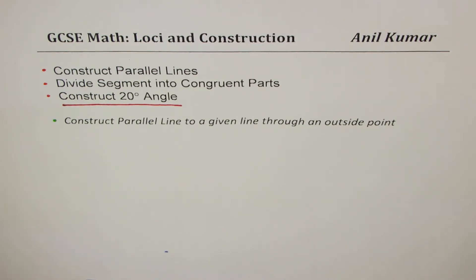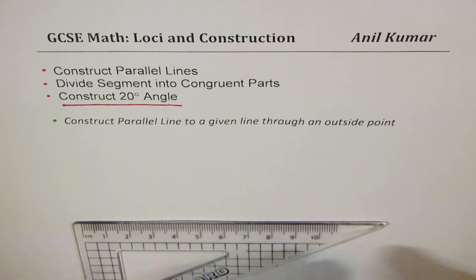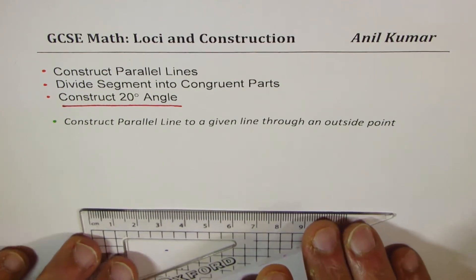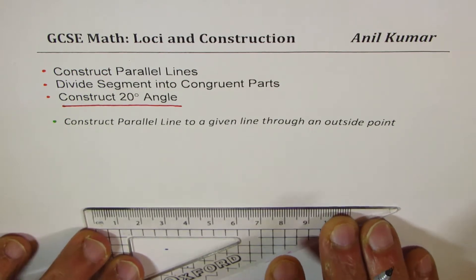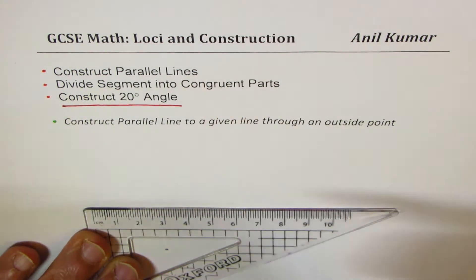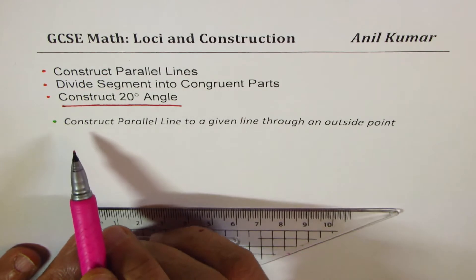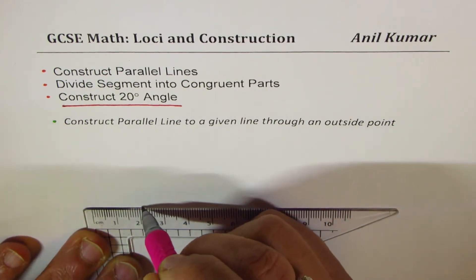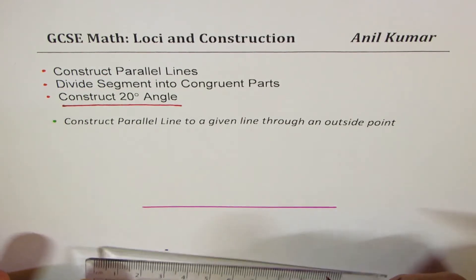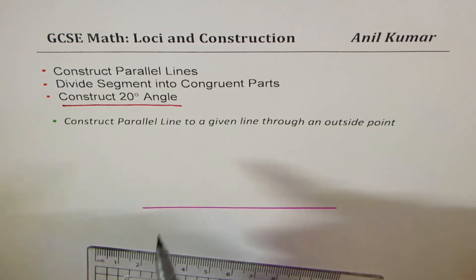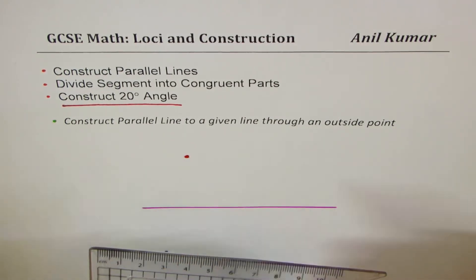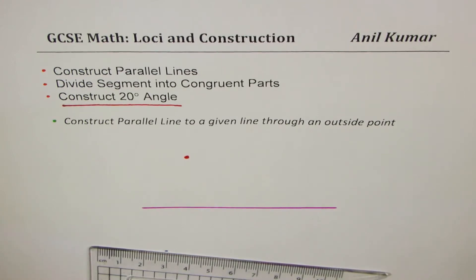Let's begin by understanding how to sketch parallel lines. If you already know it, you can skip this part and move on to the later half of this video. We'll assume that we have a particular line and we have to draw a line parallel to it given an outside point — so let's say this is the point which is outside the given line.